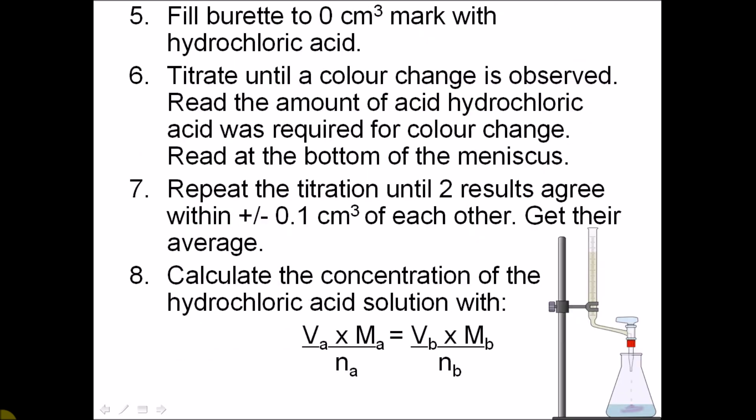Fill the burette to the 0 cm³ mark with hydrochloric acid, making sure the bottom of the meniscus is at 0 cm³. Set up the apparatus as shown in the diagram and titrate until you observe a colour change. Then find the concentration of the hydrochloric acid using the molarity-volume formula, where n is equal to the number of moles.